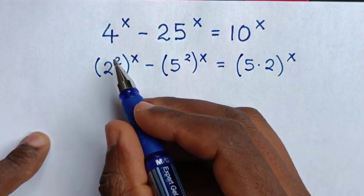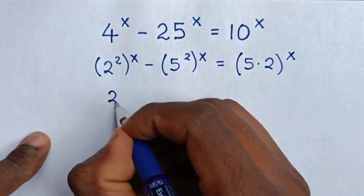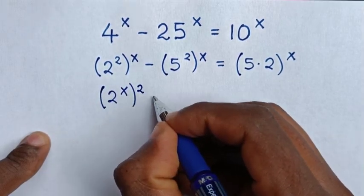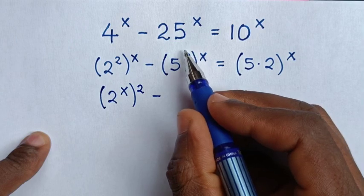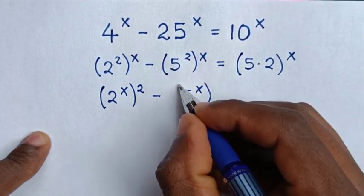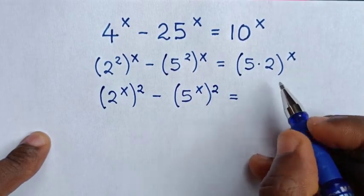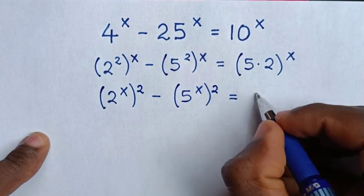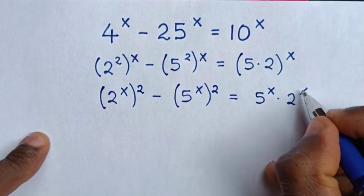We exchange the power of x inside the bracket with the power of 2 outside. So it will be (2^x)² minus — similarly, exchanging in the other term — (5^x)² equals 5^x times 2^x.